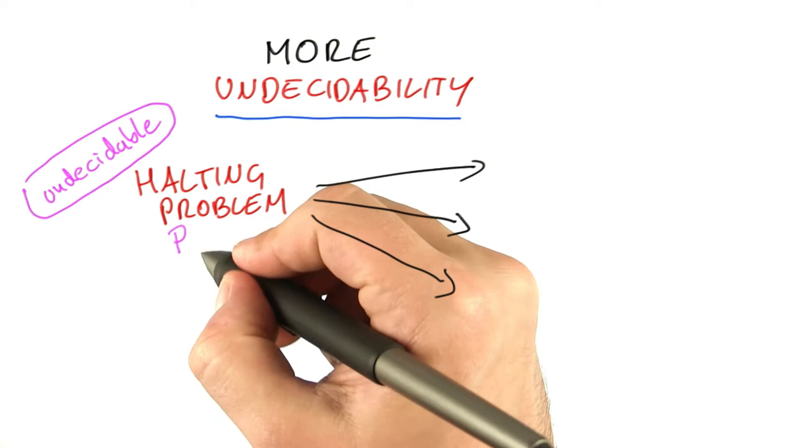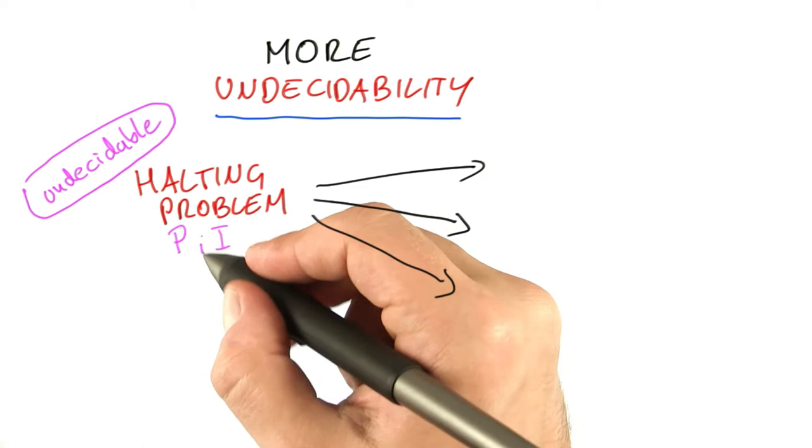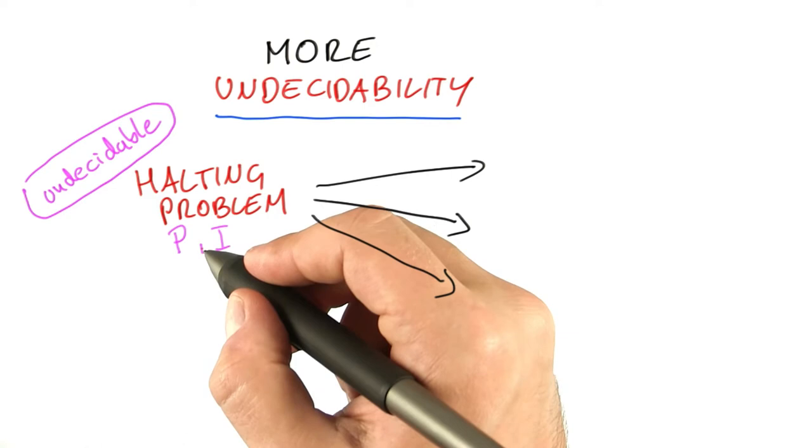Now the first problem we might be looking at is a generalized version of the halting problem. As you'll remember, the halting problem takes as input a program and an input on which to run that program. And what we could now ask is of course a more general question.